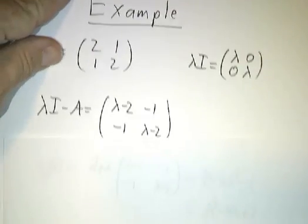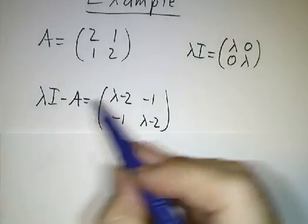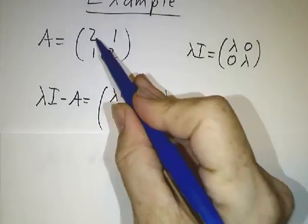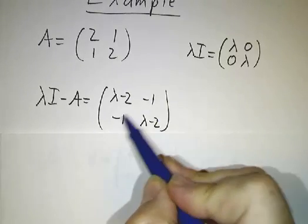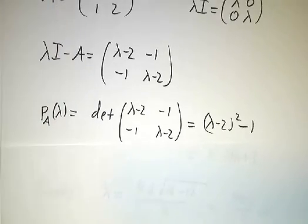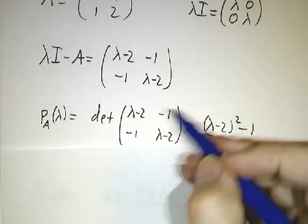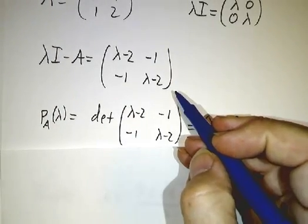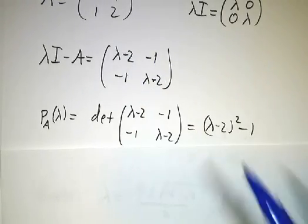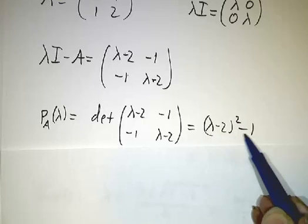And now we want to look at the matrix lambda times the identity minus A. So you could just put lambdas in the diagonal, and then you copy all the entries of A only with a minus sign. And then the characteristic polynomial is the determinant of that matrix. And you know how to take the determinant of a 2 by 2 matrix. It's this times this minus this times this. So it gives you lambda minus 2 squared minus 1.